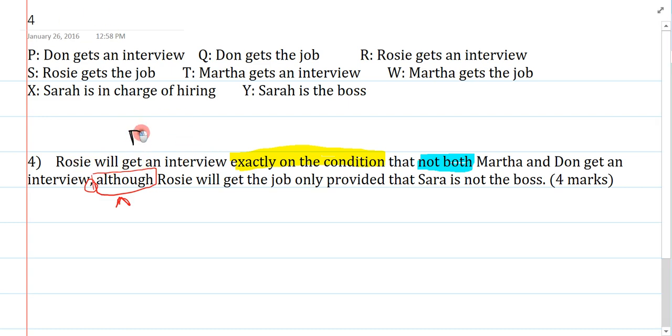Rosie will get an interview is R. Exactly on the condition is a biconditional. Not both. Well, I have to know how to symbolize that. Martha and Don get an interview. Martha gets an interview is T. Don gets an interview is P. So I'm ready to symbolize the left conjunct. It's R, biconditional, not both T and P. And I can symbolize that like so. Not bracket T and P. Of course, I could symbolize this the other way. It looks like this. That's also acceptable. Now I want the main connective to be and, so I better put this in brackets to preserve the and as the main connective.